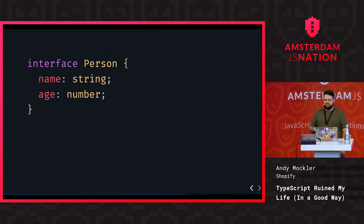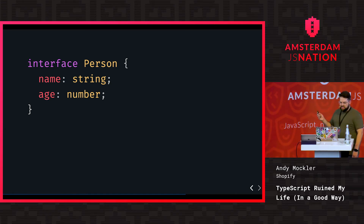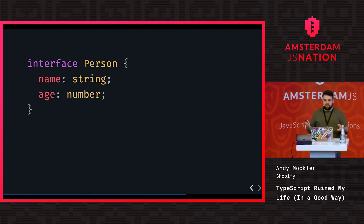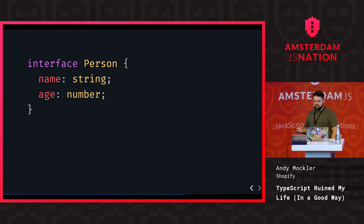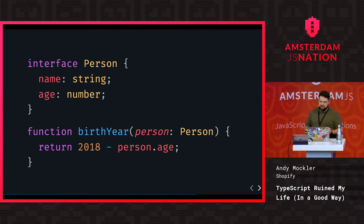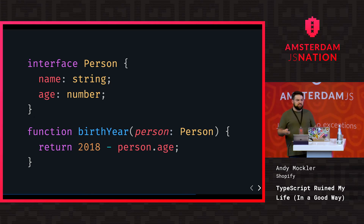An interface is sort of like a typed object — it looks similar to plain JavaScript object syntax. Here I declare an interface called Person with properties: name which is a string, and age which is a number. When I create an object of this Person interface, I need to supply a name string and an age number. This is really helpful for functions because now I can pass these objects around with named types. TypeScript can also infer that a function like calculateBirthYear returns a number since 2018 minus another number gives back a number.